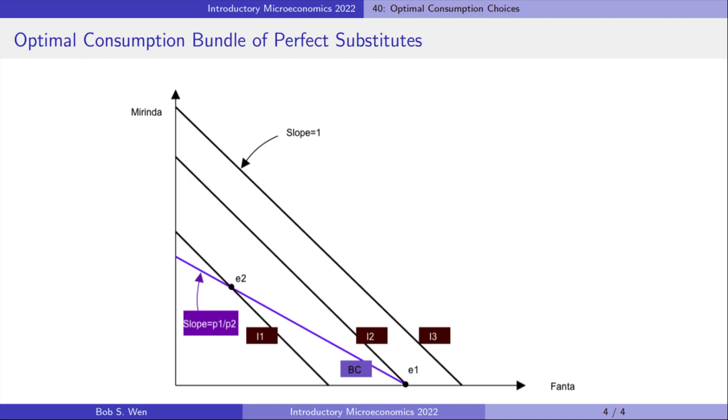Notice that if the indifference curves are convex to origin, as we have seen in the past few videos, the solution is the interior solution. The interior solution is where the budget line is tangent to the indifference curve.